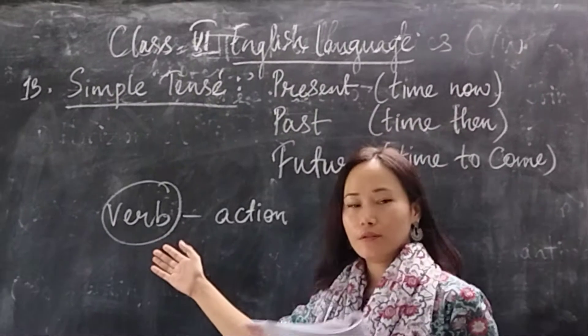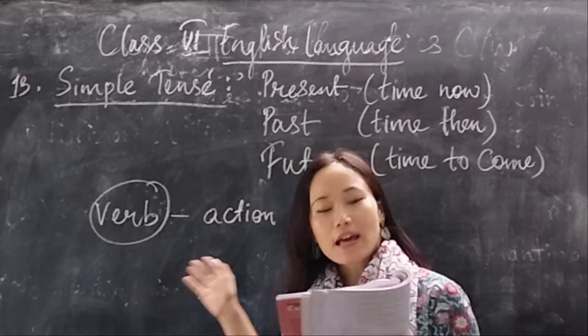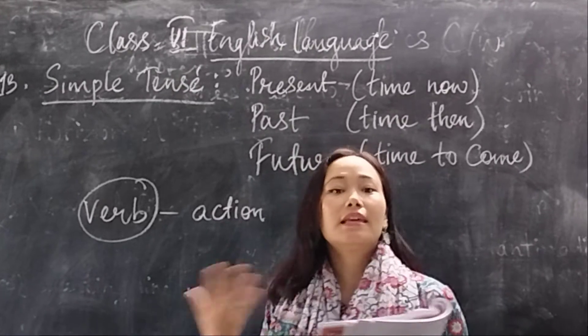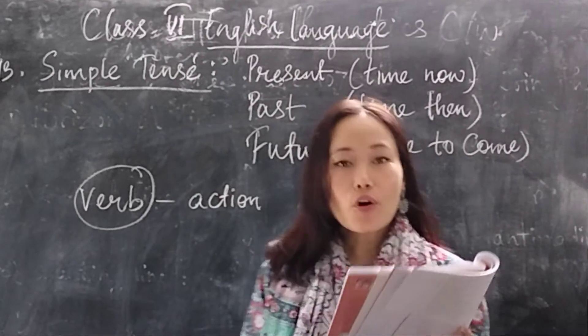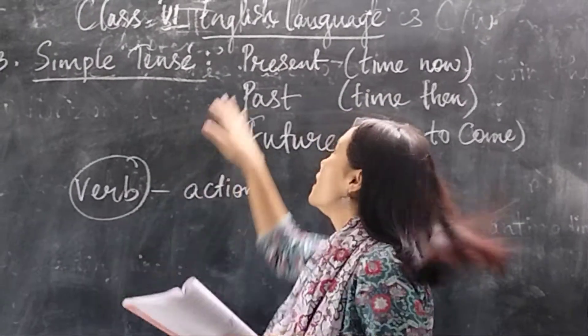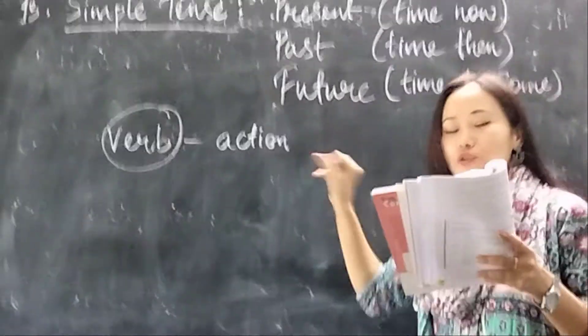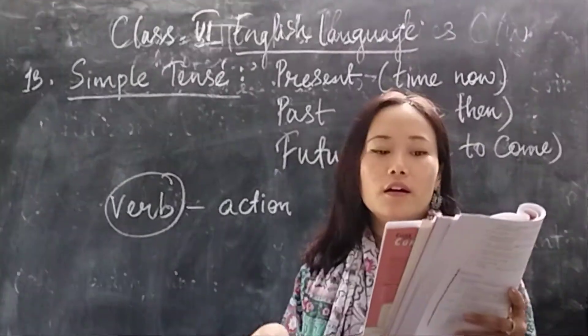Now, we also know that the verb of a sentence involves the time of an action, when the action is taking place. Therefore, we say there are three tenses of a verb: the present tense, the past tense and the future tense. We are going to see this today in this chapter.